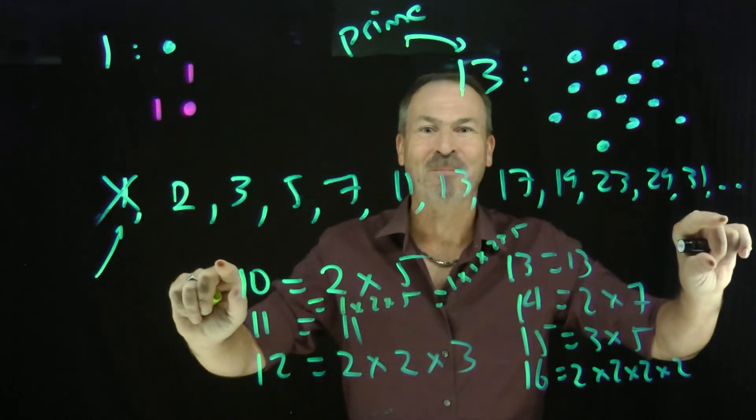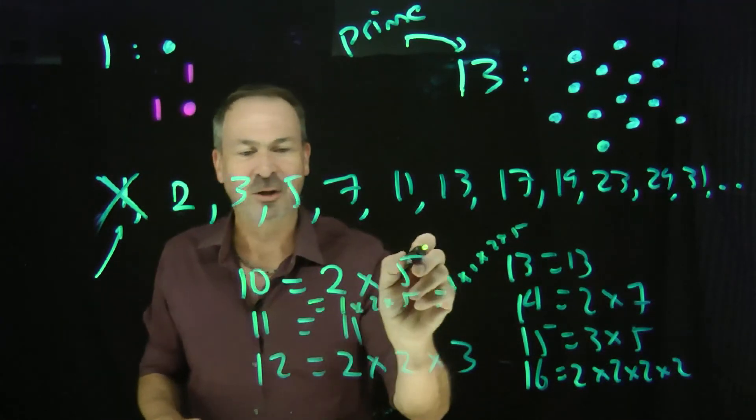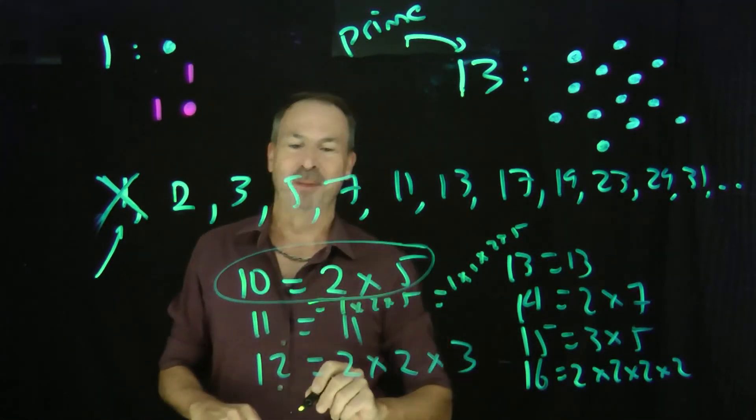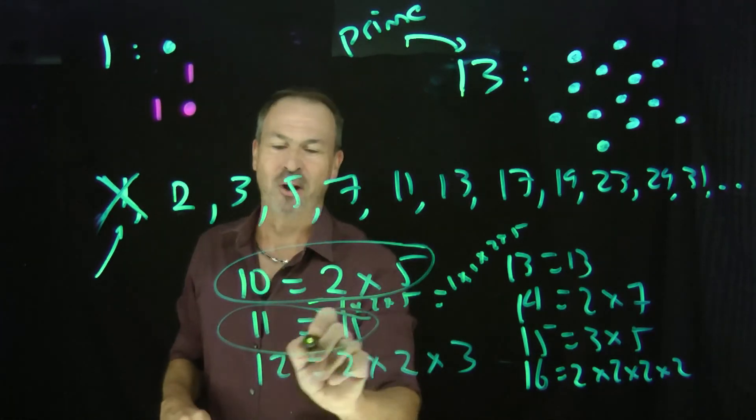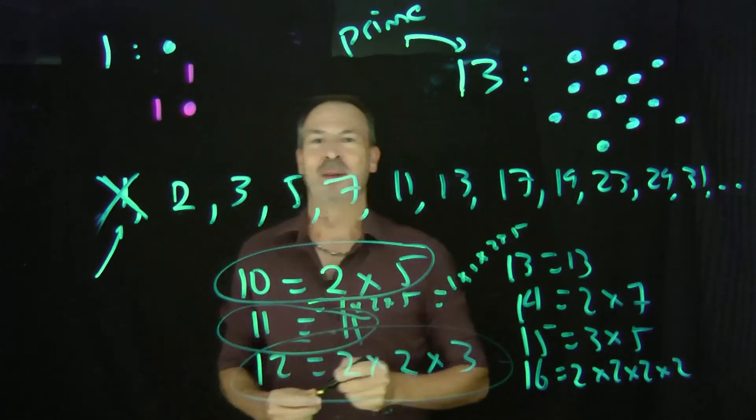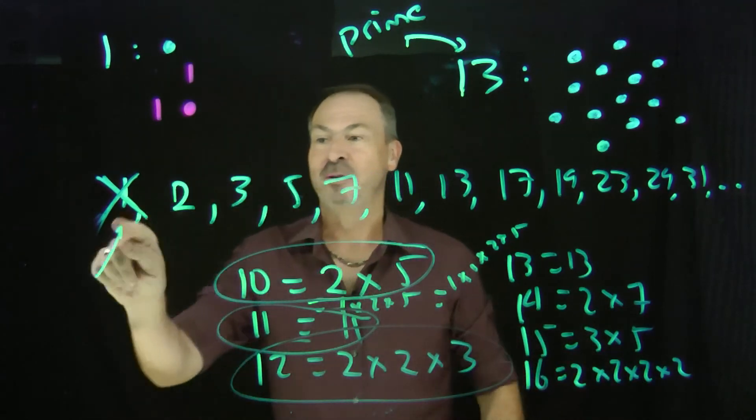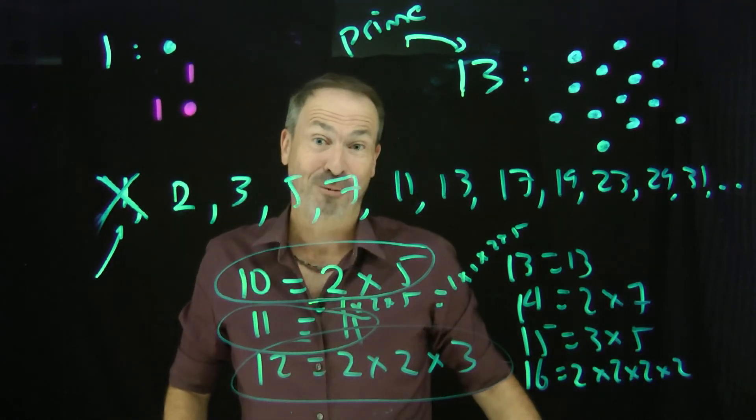In fact, the list goes on. So if you don't include 1 in your list of primes, that turns out there's only one way to make 10 from the primes, one way to make 11 from the primes, one way to make 12 from the primes, and so on. This is the reason why people usually exclude the number 1 from the list of prime numbers.